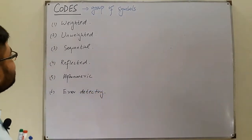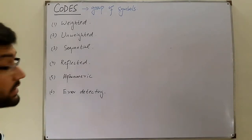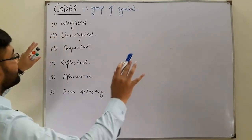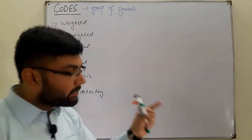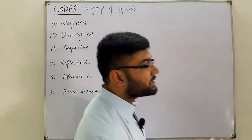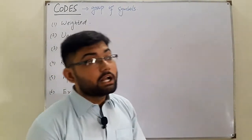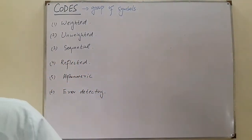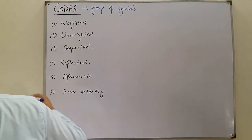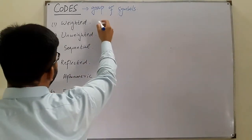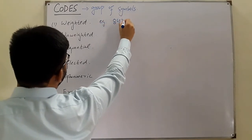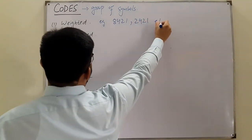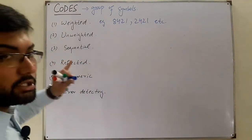The basic definition can be cleared out by the names. Weighted code — each digit has a particular weight, as we saw in the binary system and the decimal system. Those are weighted systems. Some of the codes we'll be discussing from these examples are weighted codes — for example, the 8-4-2-1 code is a weighted code, and the 2-4-2-1 code is also a weighted code.